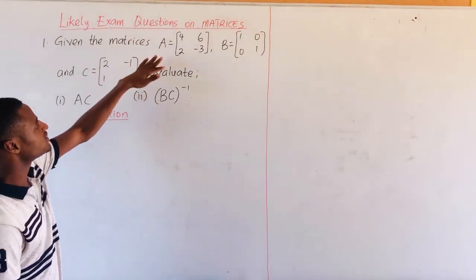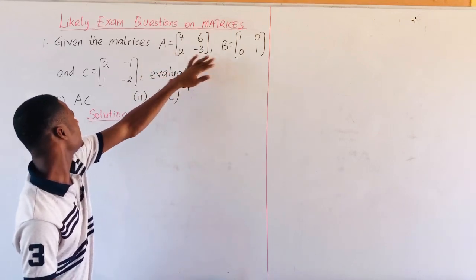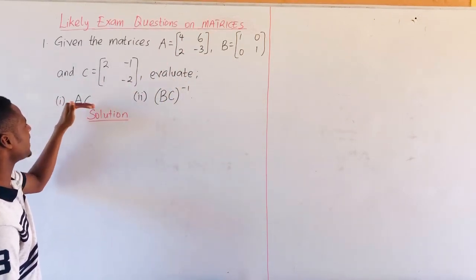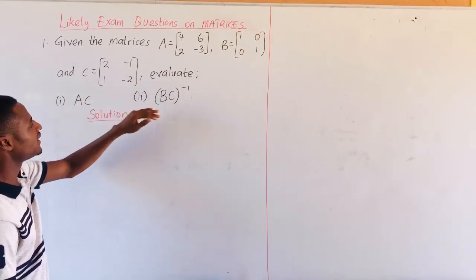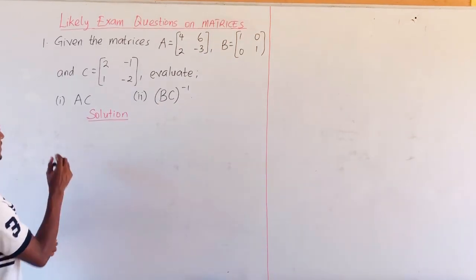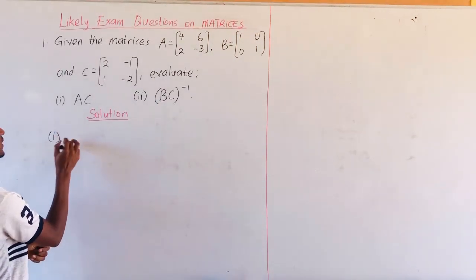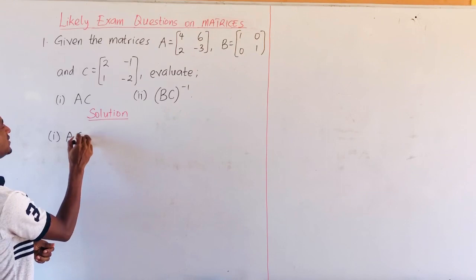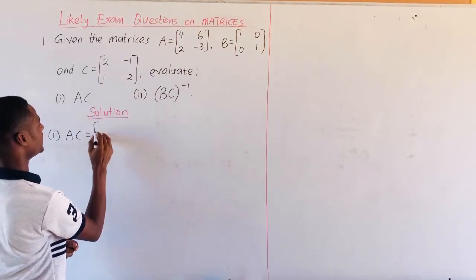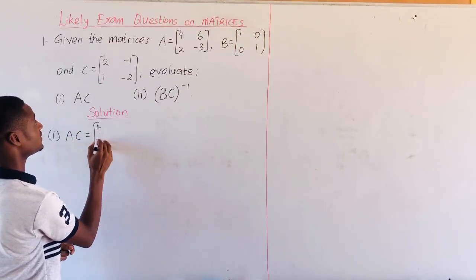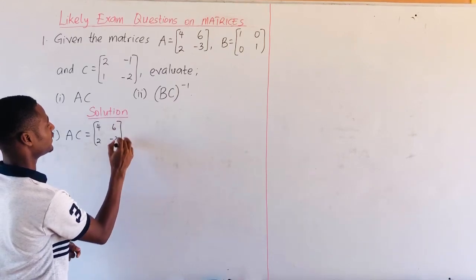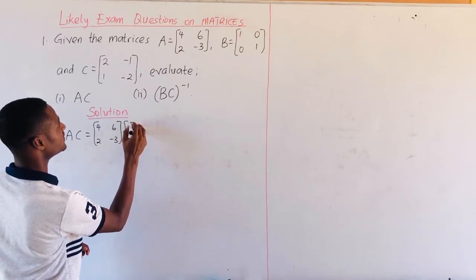Given the matrices A, B and C, we are going to evaluate A times C, and then the inverse of B times C. So, AC, which is A times C, is the matrix A times the matrix C.